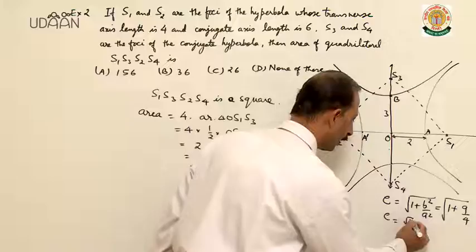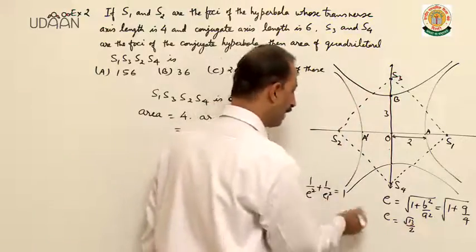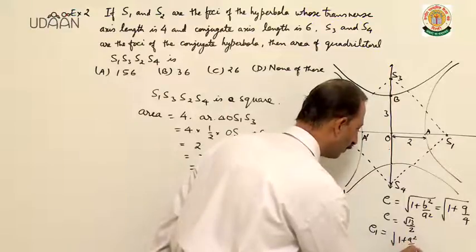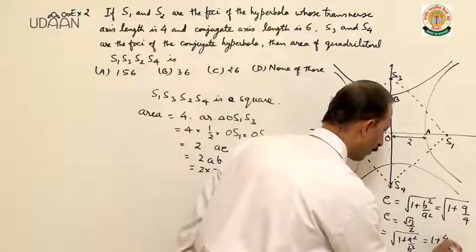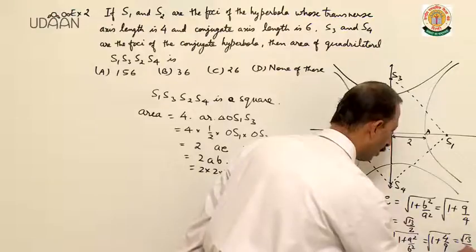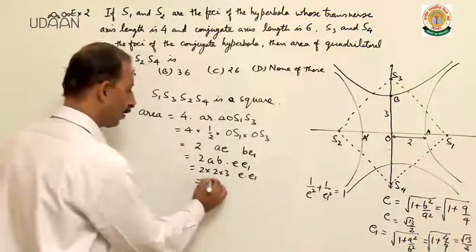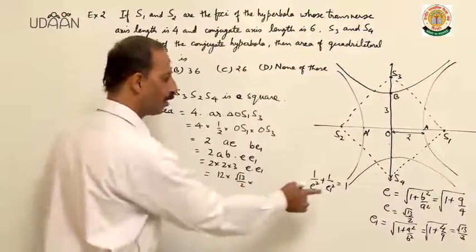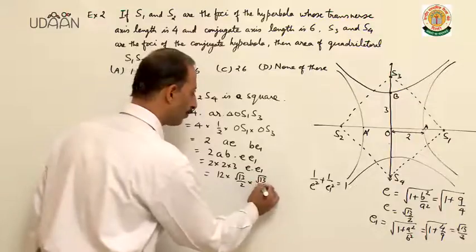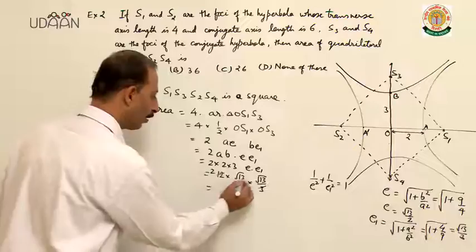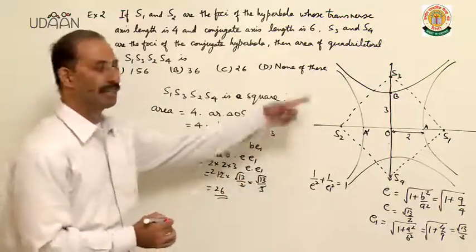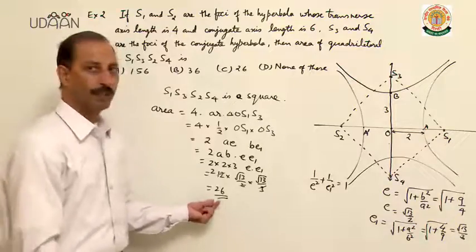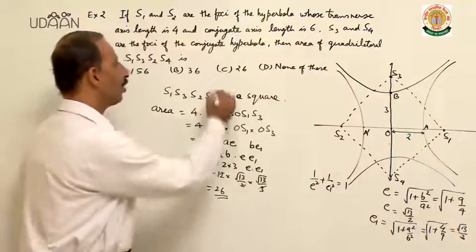Putting values: area equals 4 times half times AE times BE1 equals 2 times 2 times root 13 upon 2 times 3 times root 13 upon 3 equals 26 square units. That is the area of the quadrilateral S1, S3, S2, S4, which is a square. Its area is 26 square units. C option is the correct option.